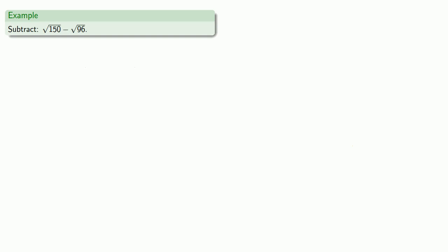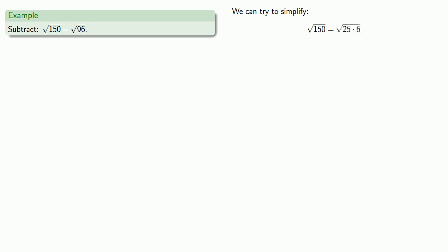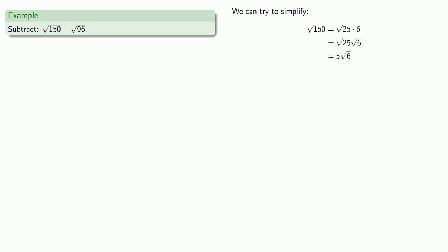How about a subtraction? Once again, the radicands are different so we can't do anything immediately, but we can try to simplify. Square root of 150 is square root of 25 times 6, which we can simplify to 5 square roots of 6.